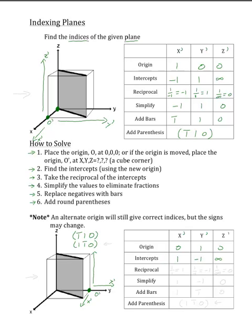Next, we will take the reciprocals of these numbers. So 1 over the X prime coordinate, which will equal 1, 1 over the Y prime intercept, which will equal negative 1, and 1 over the Z prime intercept, which will equal 0.